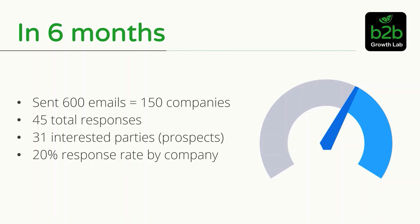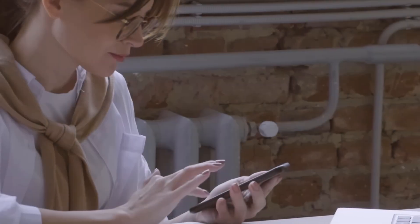So what actually happened? After six months, we sent a total of 600 emails, representing about 150 companies — on average sending to about four contacts per company. This is an account-based marketing strategy where you're not just sending to one person hoping for a direct hit. You send it to a team of people knowing that if someone thinks another team member would be interested, they'd refer it on — and we found lots of evidence of that happening. We had a total of 45 responses; 31 of those were interested, ending up at about a 20% response rate by company.